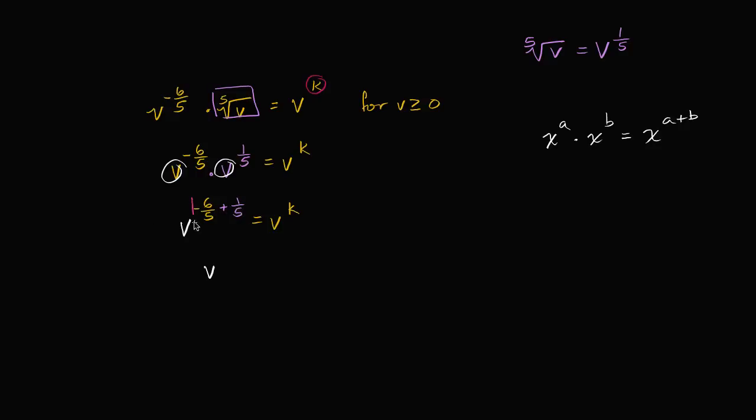So all of this is going to be equal to negative one, and that's going to be equal to v to the k. So k must be equal to negative one, and we're done.